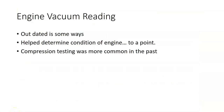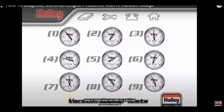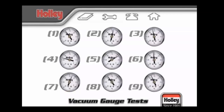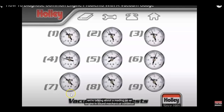In the past we used to use vacuum gauges to help determine the condition of an engine, but it's become an outdated type of test. Notice that this vacuum gauge in the bottom corner shows a steady pulse. This typically indicates a valve issue or valve problem.